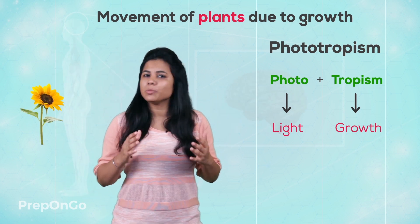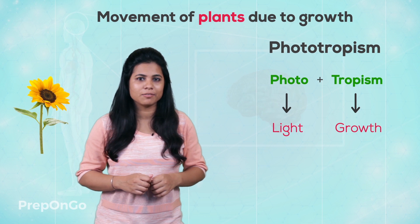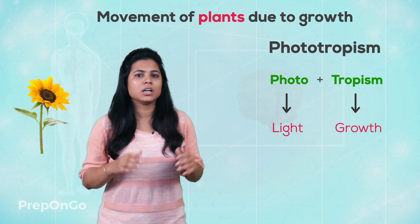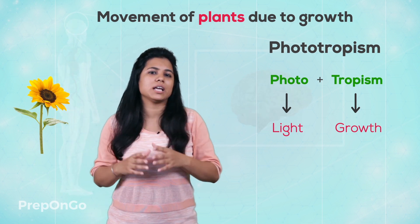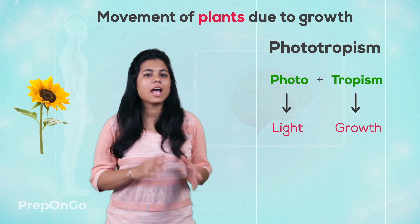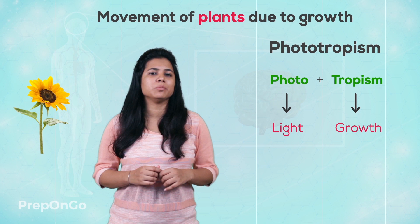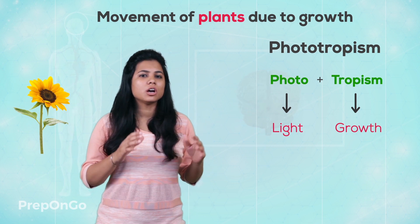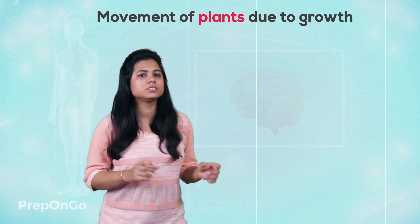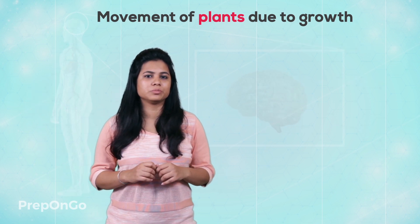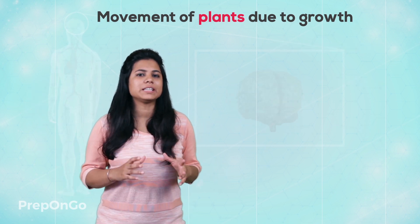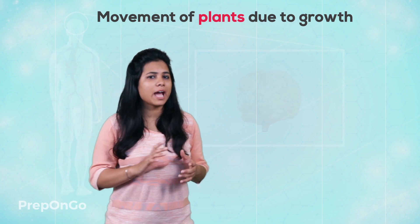You must have seen sunflowers — they move according to the sunlight, and there are many more examples. Now all plants respond to phototropism. Let's see this by an activity.